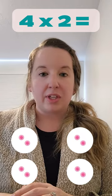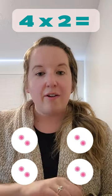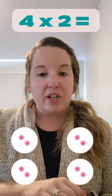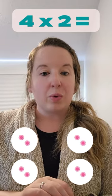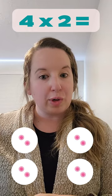So to help us understand this, we're going to look at this equation, 4 times 2. The first number is 4, so that means we're going to have 4 groups.